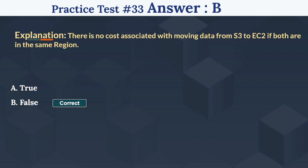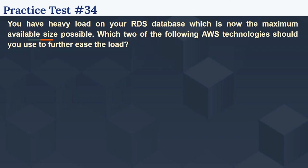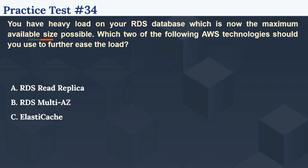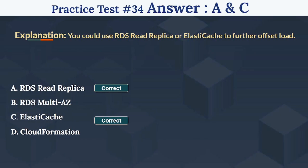So the 34th question is: You have a heavy load on your RDS database which is now the maximum available size possible. Which two of the following AWS technologies should you use to further ease the load? The options are: Option A RDS read replica, Option B RDS multi-AZ, Option C ElastiCache, Option D CloudFormation. The right answer is A and C — RDS read replica and ElastiCache. You could use RDS read replicas or ElastiCache to further offset load.